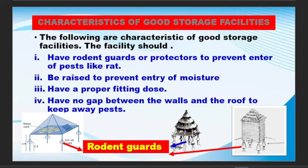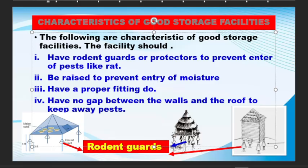Let's look at the characteristics of good storage facilities. They should have a rodent guard or protector to prevent entry of pests like rats. There should be ways to prevent entry of moisture. Have a proper fitting with no gap between the wall and the roof to keep away pests.